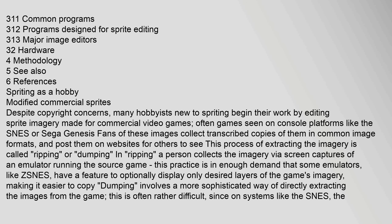Despite copyright concerns, many hobbyists new to spriting begin their work by editing sprite imagery made for commercial video games, often games seen on console platforms like the SNES or Sega Genesis. Fans of these images collect transcribed copies of them in common image formats, and post them on websites for others to see. This process of extracting the imagery is called Ripping or Dumping. In Ripping, a person collects the imagery via screen captures of an emulator running the source game.